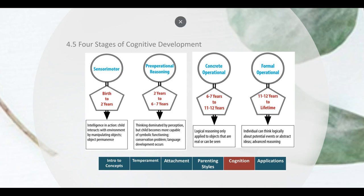Notice that three of these stages have the word 'operations' in them. Operations, according to Piaget, is equivalent to logic. So what he's saying is that children in the sensorimotor and pre-operational stages have not yet acquired a reliable use of logic and may be irrational. Children in the concrete operational stage begin to be rational but only if you allow concrete representations, and then as they advance into the formal operational stage they can be both logical and reason in the abstract.